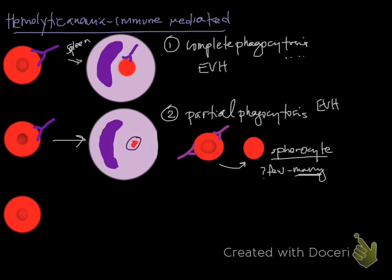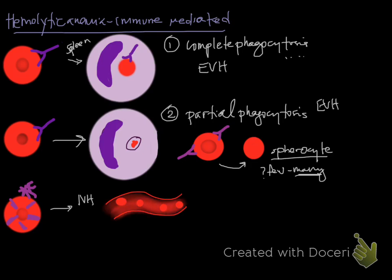The third option that can happen is intravascular hemolysis. Intravascular hemolysis often occurs due to IgM — those much larger pentameric antibodies — which are more likely to form a membrane attack complex, although there are other mechanisms. If you remember from immunology, the membrane attack complex results in hemolysis right then and there within the vasculature. When you see intravascular hemolysis, you're going to see hemoglobinemia, hemoglobinuria, and anemia.